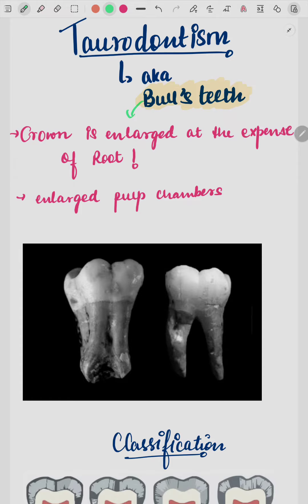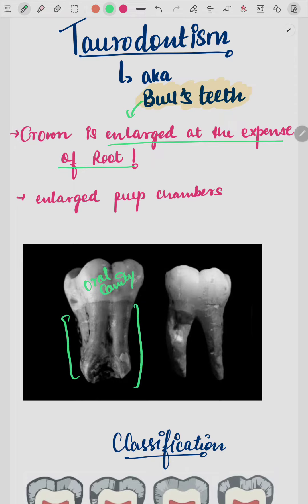The crown is enlarged at the expense of the root. The enlargement is seen in the root portion and not in the coronal portion. So if you look in the oral cavity, everything will appear normal, because the main problem is visible radiographically.